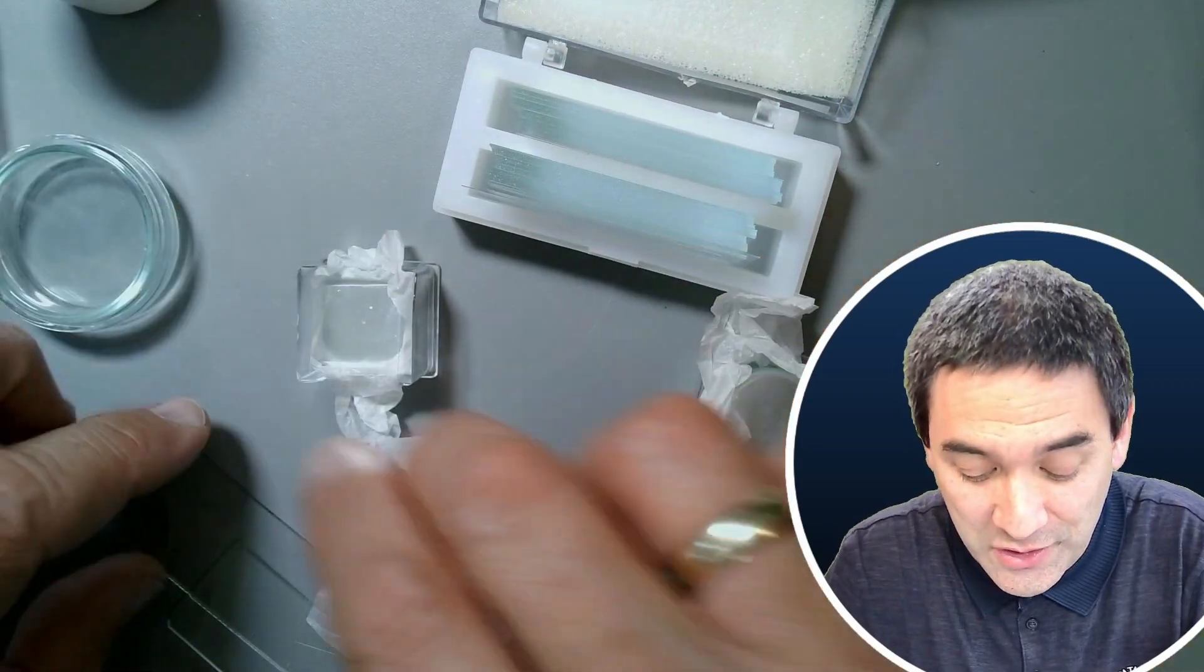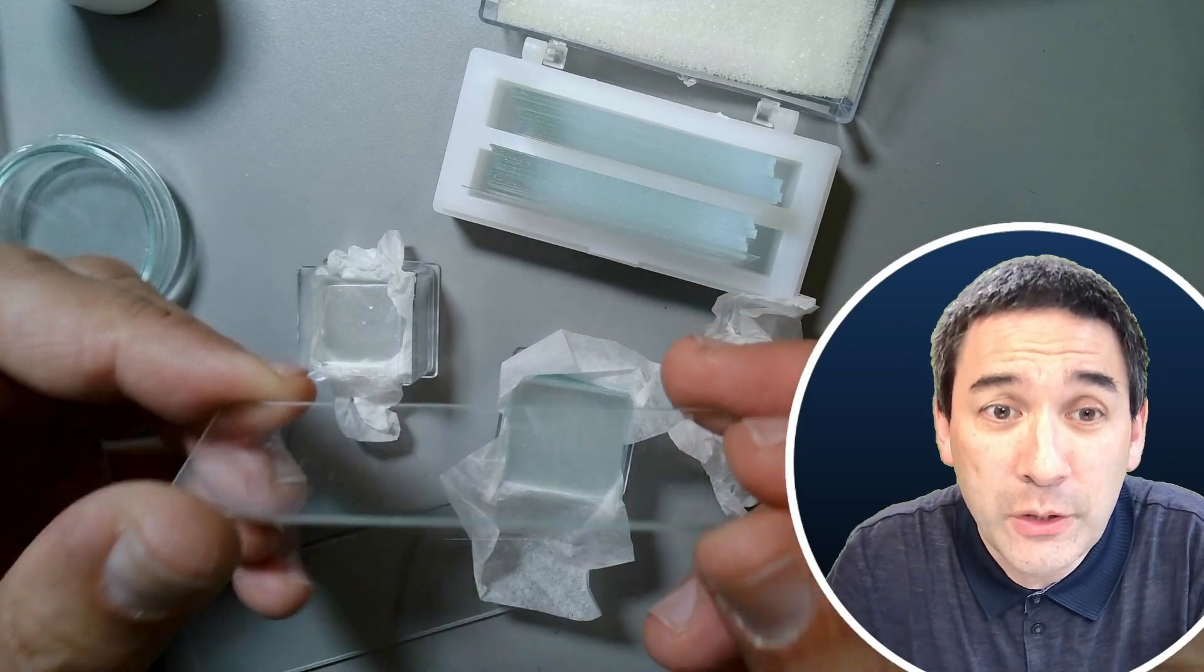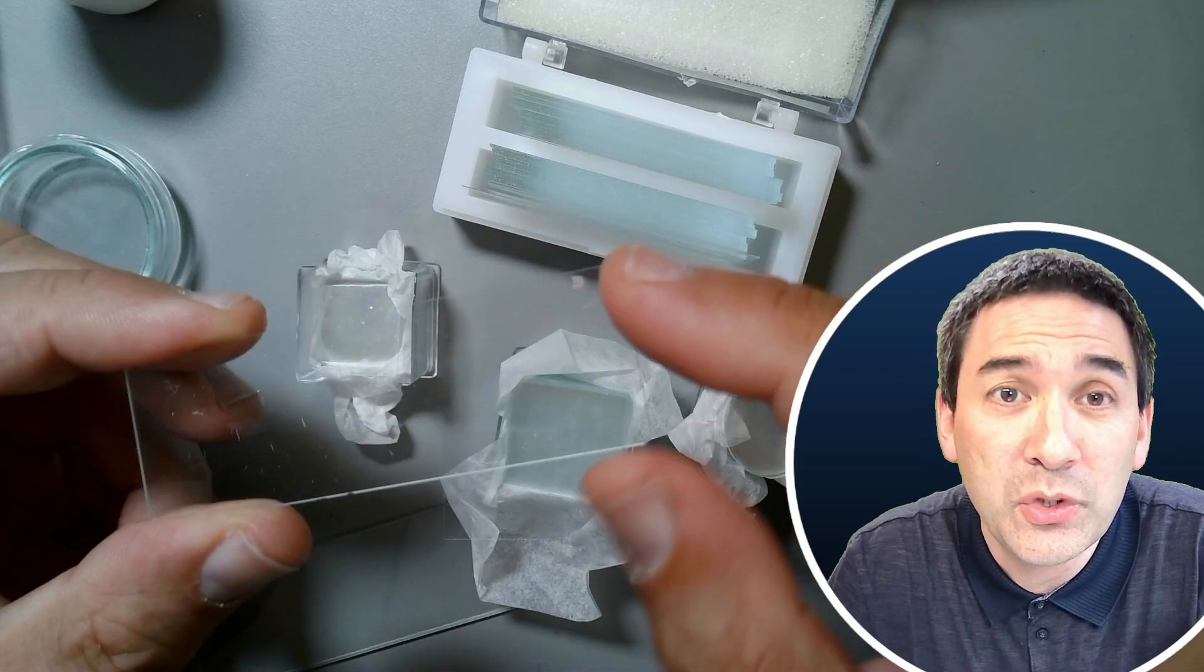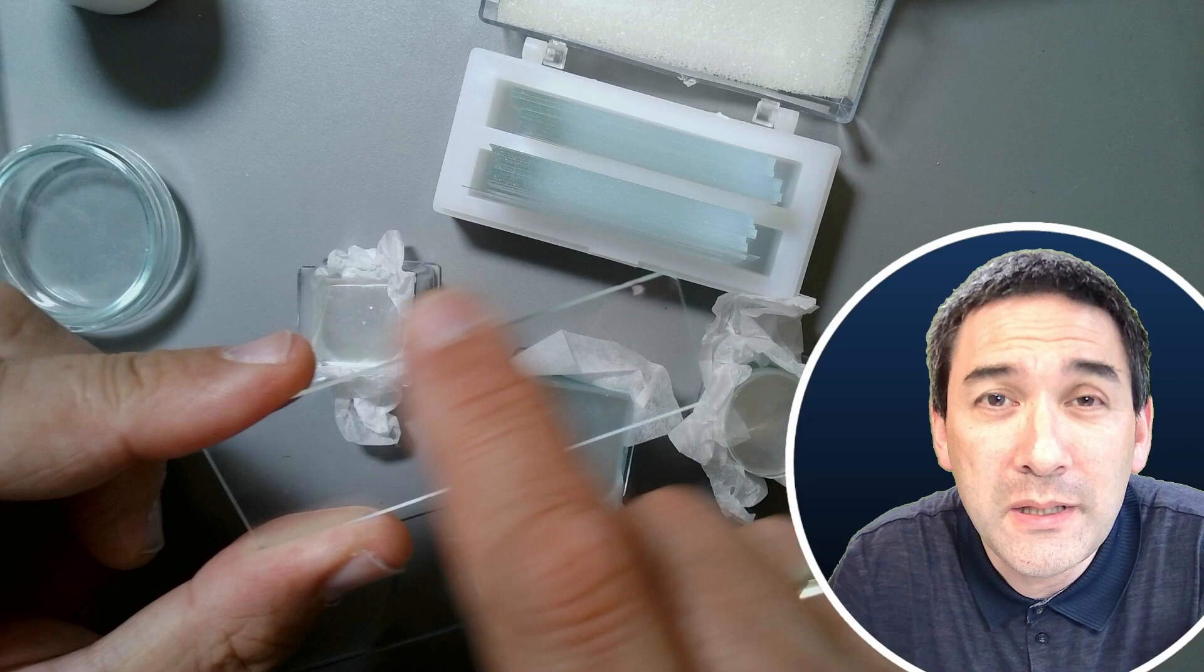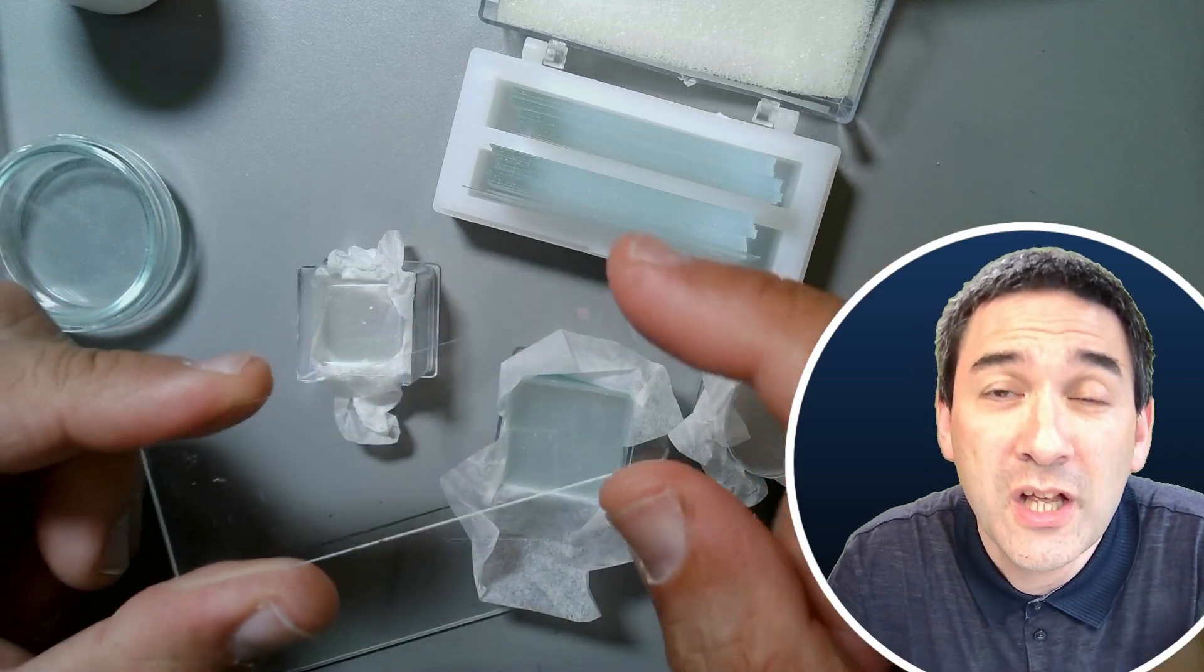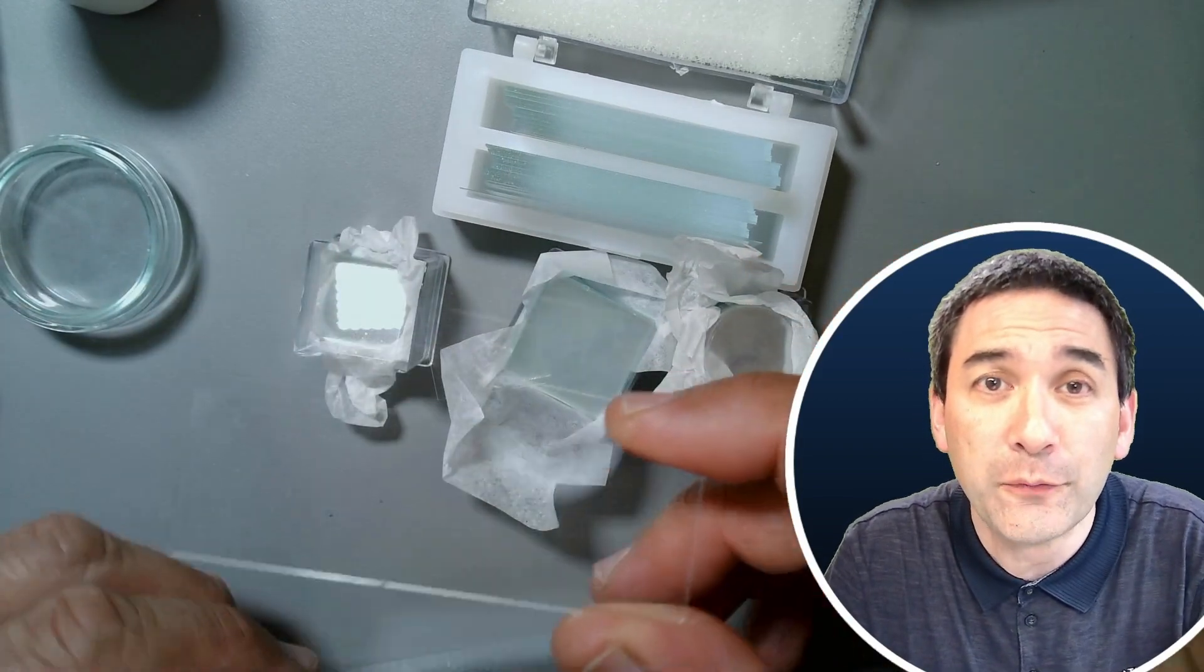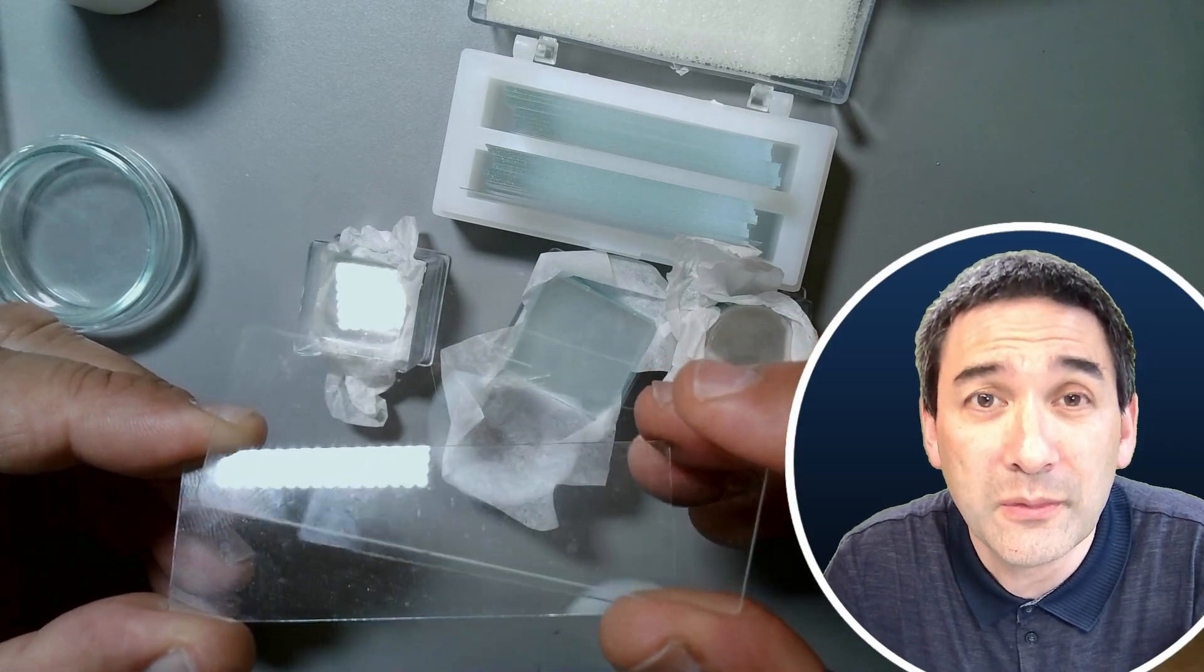Microscope slides are made of glass, obviously. Approximately one millimeter thick, 2.5 centimeters wide and 75 millimeters long. That's 25 by 75 millimeters, one inch by three inches approximately. Those microscope slides come in different qualities and also different modifications.